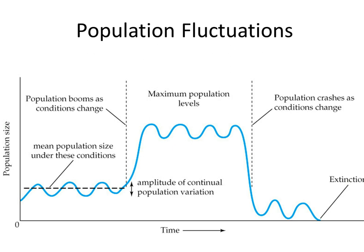Populations naturally fluctuate over time. This chart gives you some idea of how that can happen, where it can reach a maximum, it can crash, or conditions can change to cause it to crash, and at some point it is no longer viable and cannot reproduce and goes extinct.